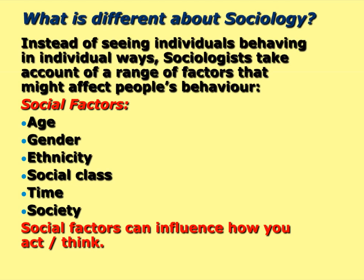What's different about sociology? Some of you might be studying psychology or history. We don't really look at individuals behaving in an individual way — we look at what we call social factors and how they affect people's behaviour. Social factors that can affect our beliefs, views, and values include: age, gender, ethnicity, social class, time period, and the type of society you live in. Just to be clear, ethnicity is different to race — race is about skin colour, a biological element, whereas ethnicity is about your culture, perhaps your religion, beliefs, and values.